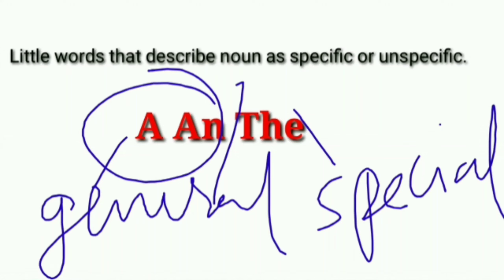Article, determiner ka hi ek path hai aur yeh noun ko determine karta hai, fix karta hai ki yeh jo noun hai, wo general hai ya special hai.